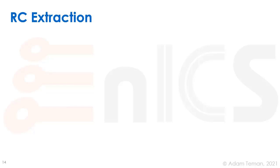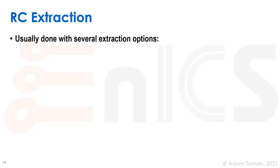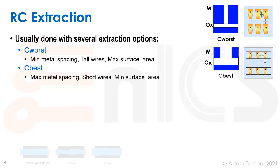Another point is RC extraction — what do we do with the metal layers and the back end? We've discussed process variation with the front-end layers and transistors: fast-fast corners, slow-slow corners, etc. But the back-end layers also have variation, and we address this by providing several extraction options to the extraction tools.